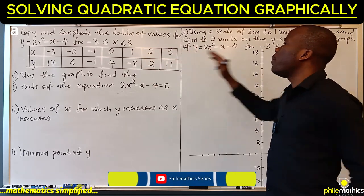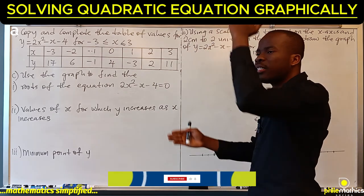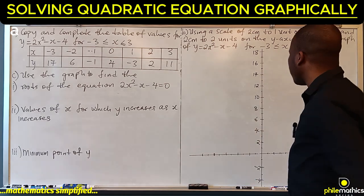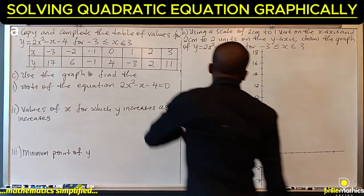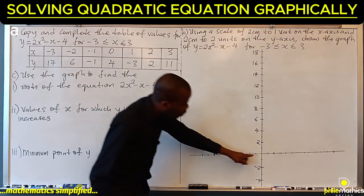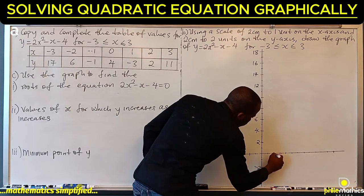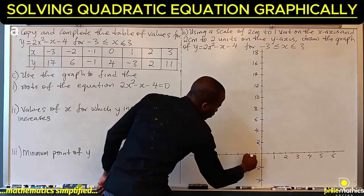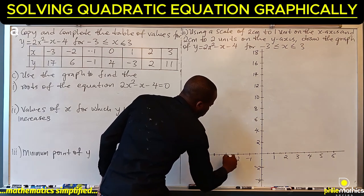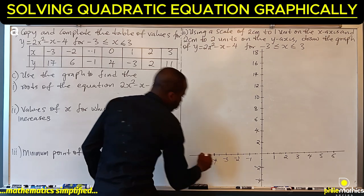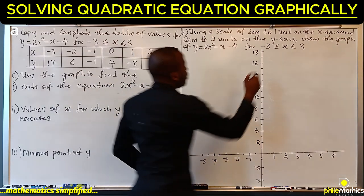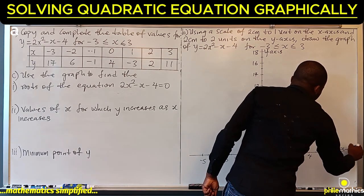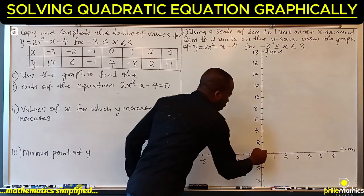For the x-axis, the negative and positive parts are even so it's symmetric — that's why it's at the center. Using a scale of 2cm to 1 unit, this is 1cm and this is 2cm, counting 1, 2, 3, 4, 5, 6 and minus 1, minus 2, minus 3, minus 4, minus 5. This is our y-axis, this is our x-axis, and this is our origin, zero.